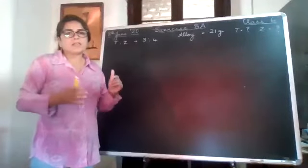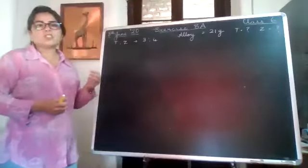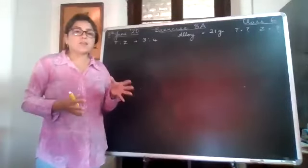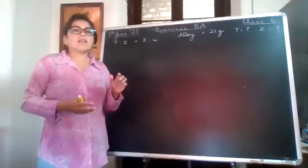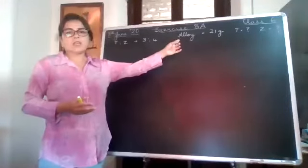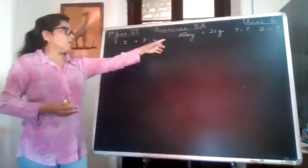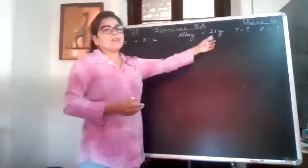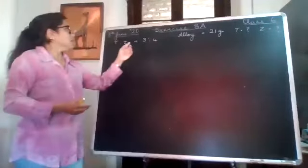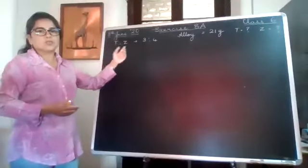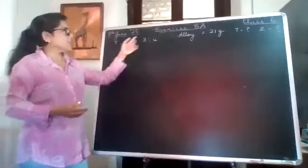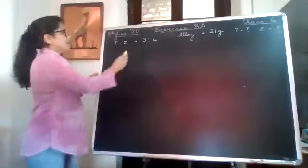So the gold, the steel, the silver, aluminum - all these are different metals and they are obtained from alloys. Now in this alloy whose weight is 21 grams, there is tin and zinc. These two elements are in this alloy and they are in this ratio: if there is three grams of tin, there is four grams of zinc.